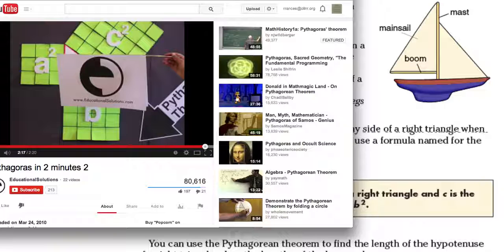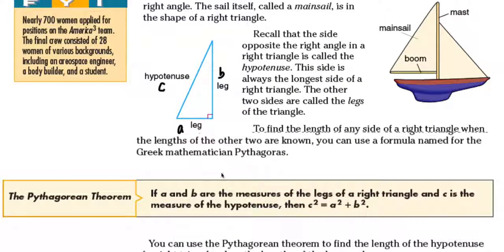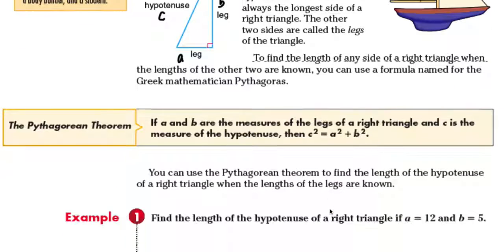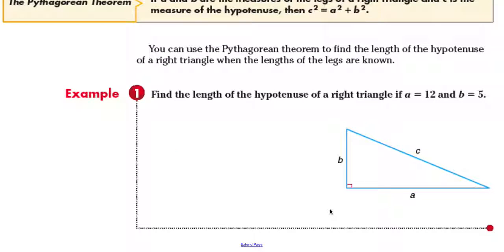So that was a good video on why you can see that A squared plus B squared is actually C squared. You get the square of A plus the square of B, and that's exactly C squared. You can use the Pythagorean theorem to find the length of the hypotenuse of a right triangle. Remember, this only works for a right triangle, no other triangles.